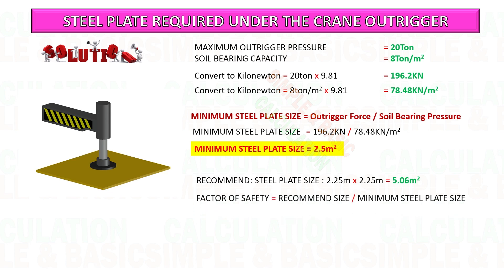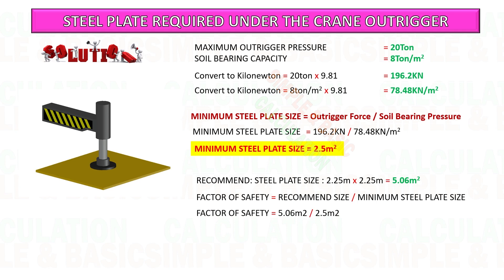For my calculation, I choose to use a 2.25 by 2.25 meter steel plate. Then start to calculate the factor of safety by dividing the recommended steel plate area by the minimum steel plate size.